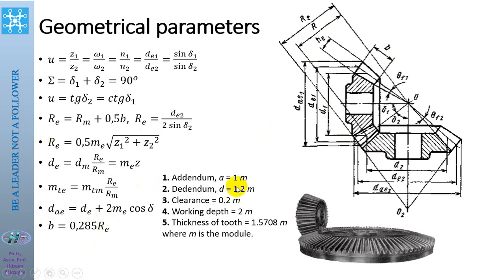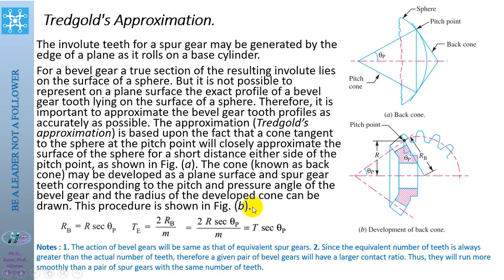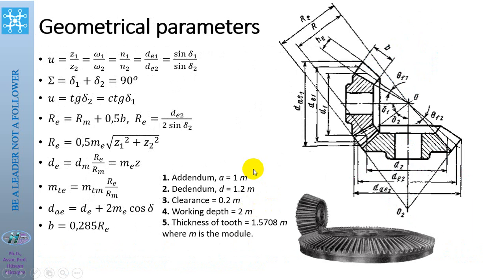The addendum of the gears may be calculated from the standard. For standard gearing, the addendum is one module; for non-standard gearing the addendum is 1.2 times the module, and the clearance is 0.2 modules. Thank you very much for your attention.